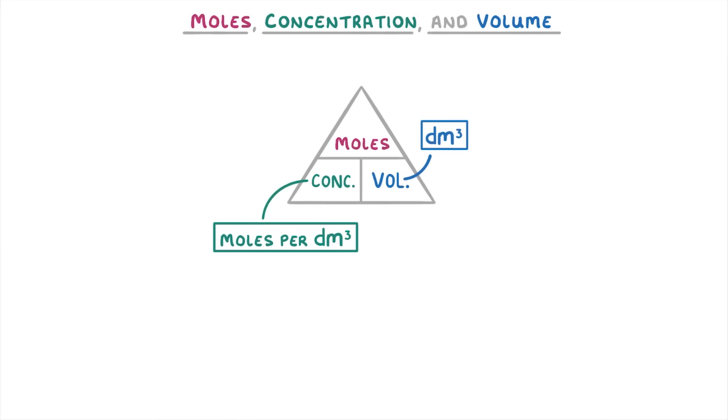We normally write this as mol, so M-O-L, and then a slash decimetres cubed, because this forward slash means per.